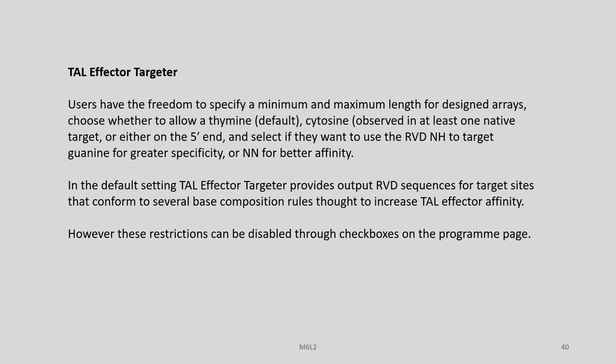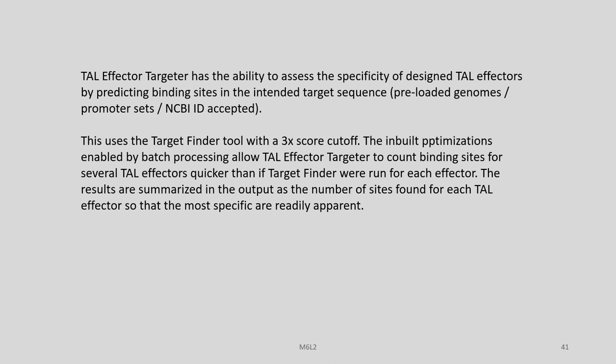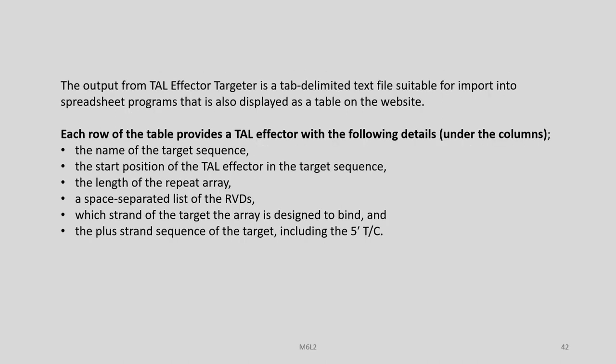In default settings, TAL Effector Targeter provides output RVD sequences for target sites conforming to base composition rules to increase TAL effector affinity. However, these restrictions can be disabled through checkboxes in the program page. The tool has the ability to assess specificity of designed TAL effectors by predicting binding sites in the intended target sequence using preloaded genomes, promoter sets, and NCBI IDs, using the Target Finder tool with a 3x core cutoff. Inbuilt optimizations via batch processing allow TAL Effector Targeter to count binding sites for several TAL effectors more quickly, with results summarized so the most specific ones are readily apparent.